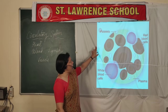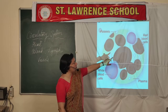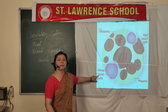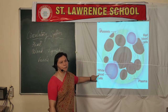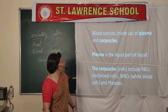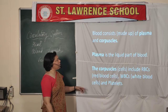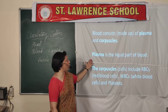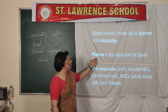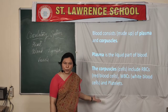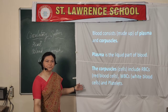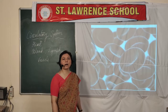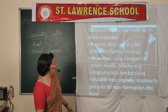What are these blood cells? We have red blood cells, white blood cells, and platelets. The blood is made up of plasma and corpuscles. Plasma is the liquid part of the blood, and the corpuscles are the other structures.